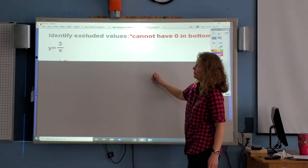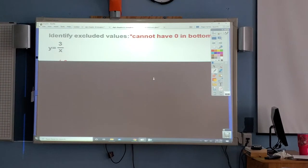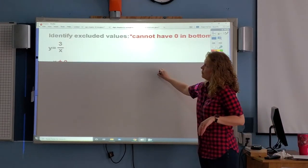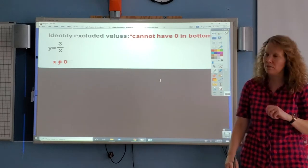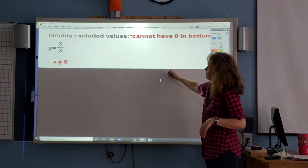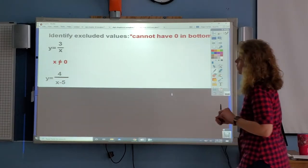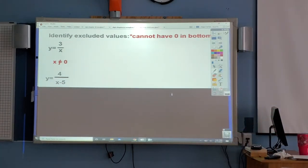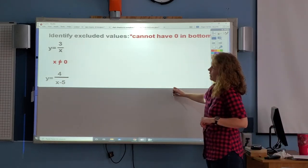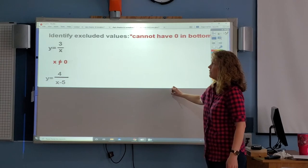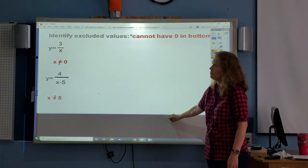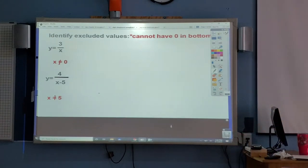This is the excluded value problem. They're going to give you this equation, y equals 3 over x, and they're going to ask you for the excluded values. What they really mean is for what value would make you have a 0 in the bottom of the denominator, and that quickly you can tell x can be any number, but it can't be 0. So x cannot be equal to 0. The next one is y equals 4 over x minus 5. You're looking for what value of x would make you have a 0 in the denominator. Quickly you can tell if you have a positive 5, 5 minus 5 would give you 0. So x can't be 5. These are quick answers, but you've got to understand what they're looking for.